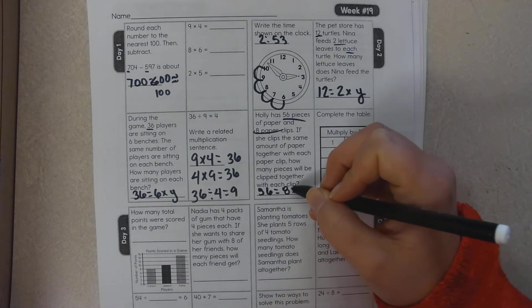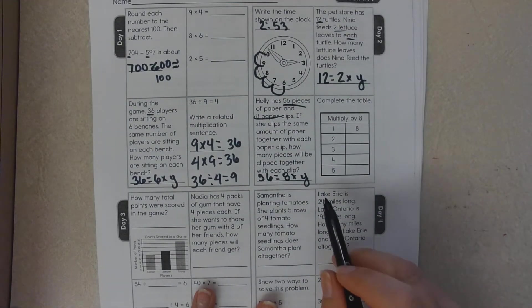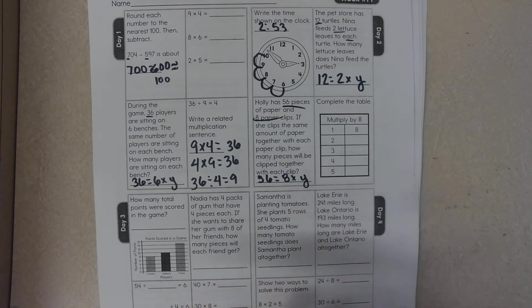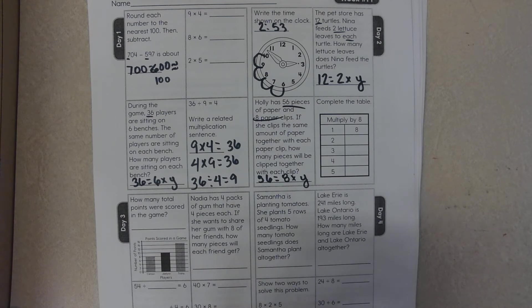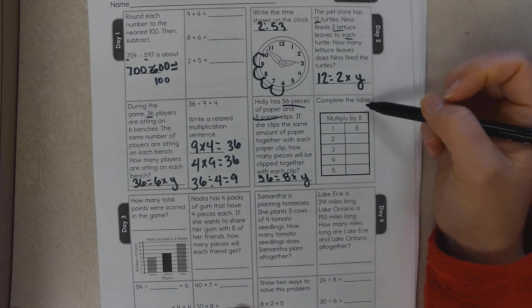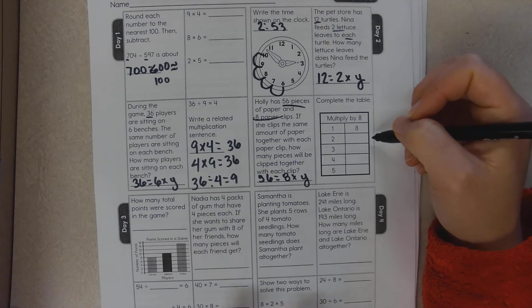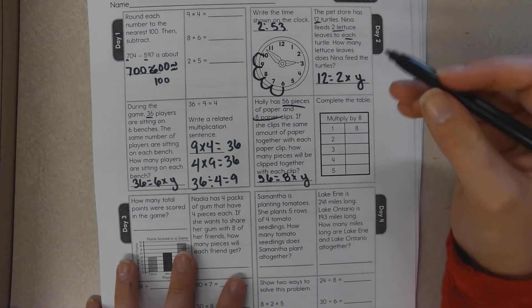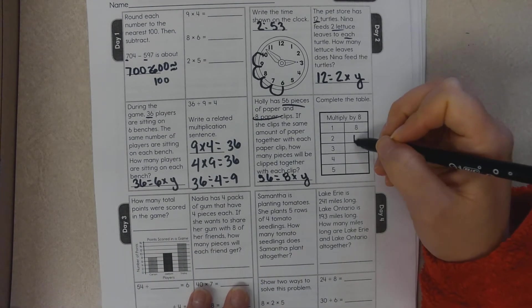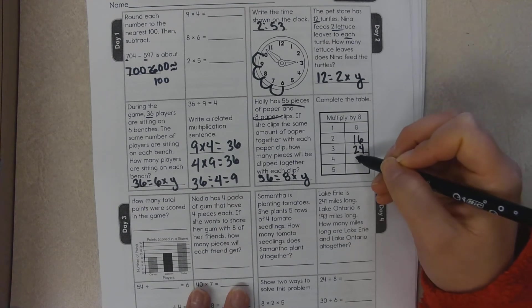You can draw a bar model or you can repeatedly add. Complete the table. Well, this might do it almost all the way for you. Eight plus eight is 16, 16 plus eight is 24, 24 plus eight is 32, 32 plus eight is 40. We're almost at 56.